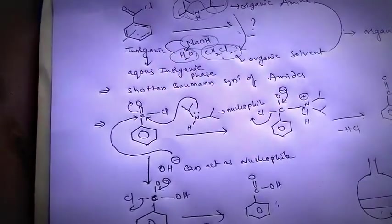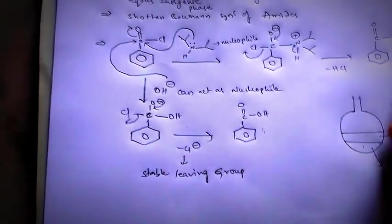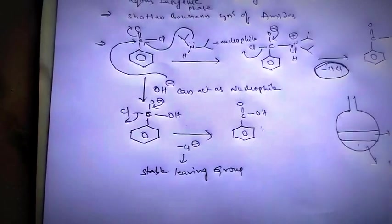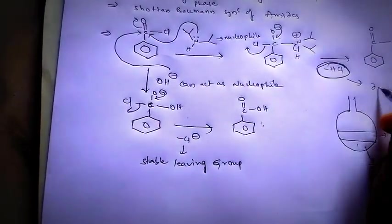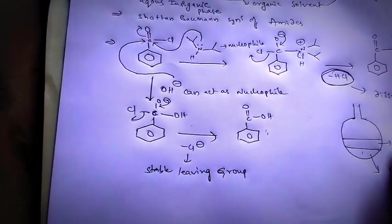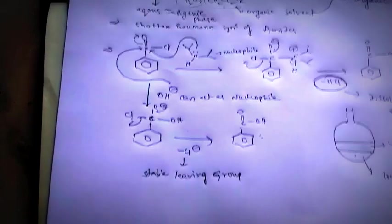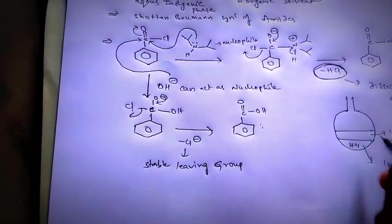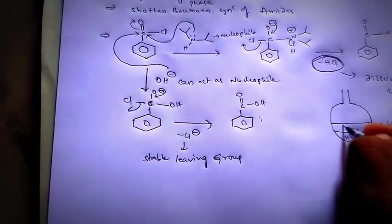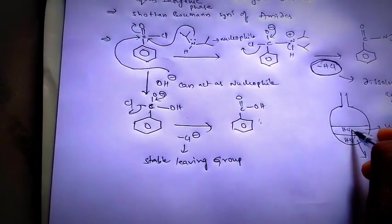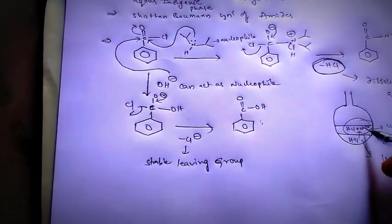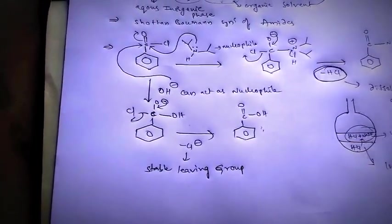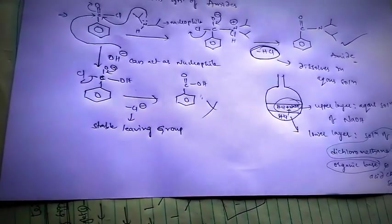And after the formation of amide, HCl is released. So this HCl, we know that HCl dissolves in aqueous solution. Hence the released HCl in the lower layer goes into the upper layer which is the solution of NaOH. In this solution, NaOH base reacts with HCl, that means NaOH neutralizes HCl in the upper layer.